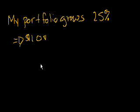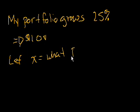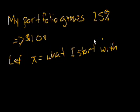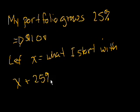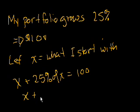To solve this one, we might have to break out a little bit of algebra. So let x equal what I start with. So just like the last problem, I start with x, and it grows by 25%. So x plus 25% of x is equal to 100. And we know this 25% of x, we can just rewrite as x plus 0.25 of x is equal to 100.